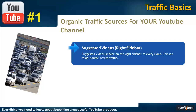First, you need to appear on the sidebar of popular videos. If a popular video has a lot of views and you appear near the top of its suggested video sidebar, you will get lots and lots of views. To make that happen, you have to target the same keywords as that video so YouTube considers your video related.